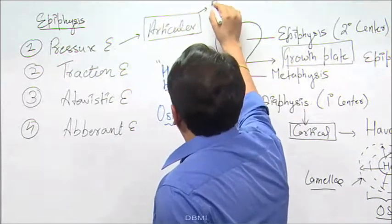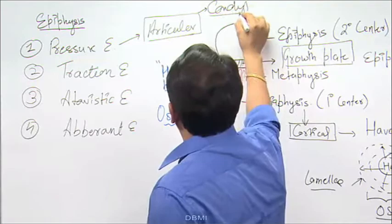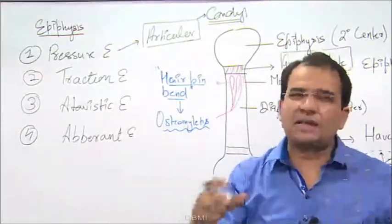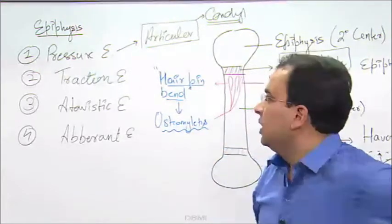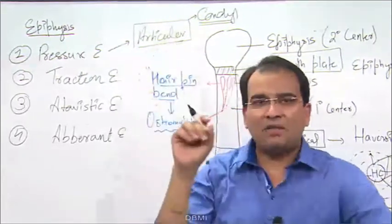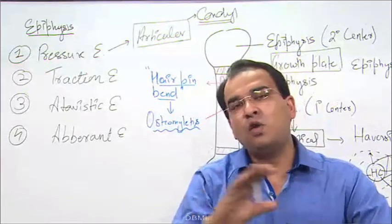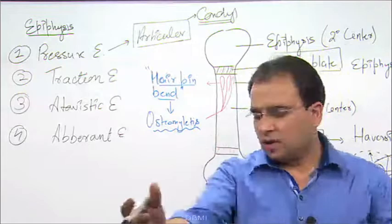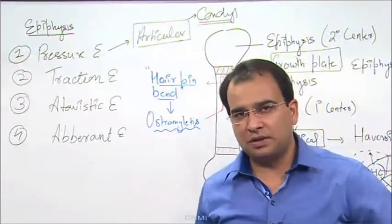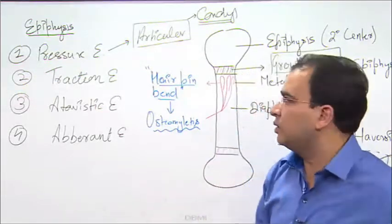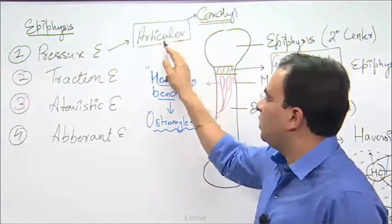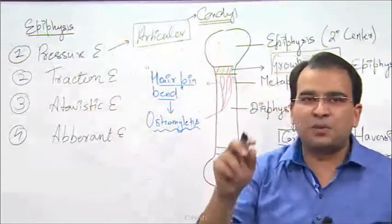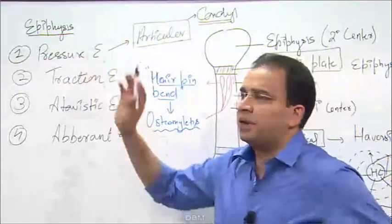Remember one key word: condyle. We have condyles in the humerus, tibia, and femur. Condyles are always articular — you take any example, whether it is a condyle of the humerus, femur, or tibia, they are all articular. And when a condyle is articular, it has to be a pressure epiphysis. So if you find any condyle in your options, it definitely is a pressure epiphysis.